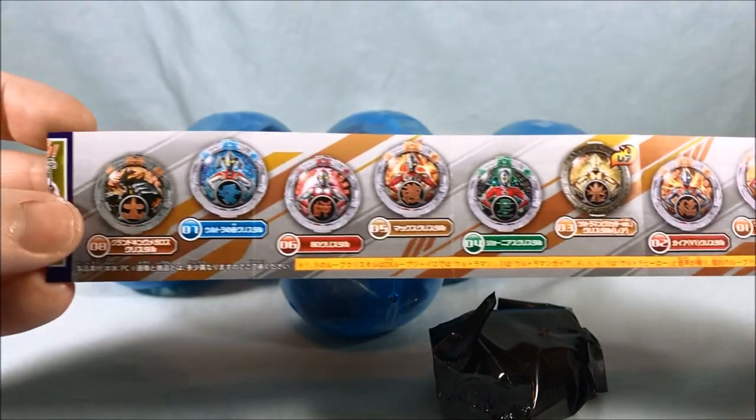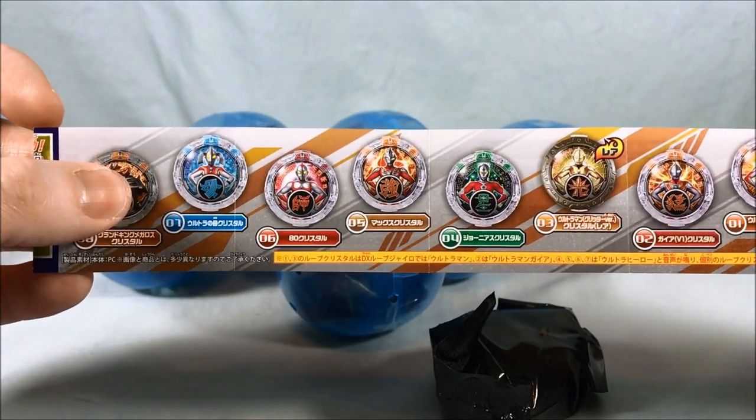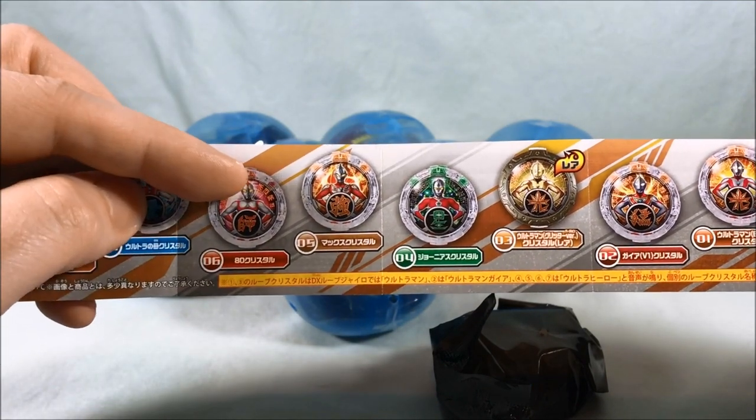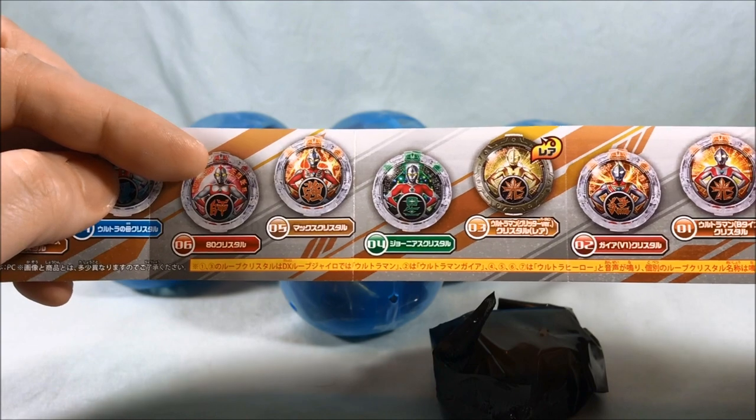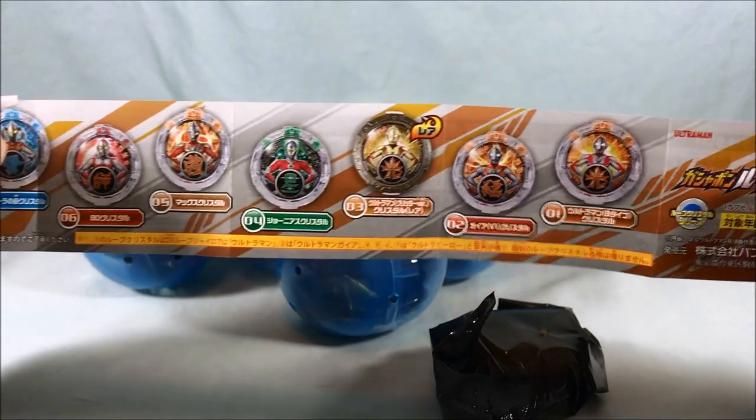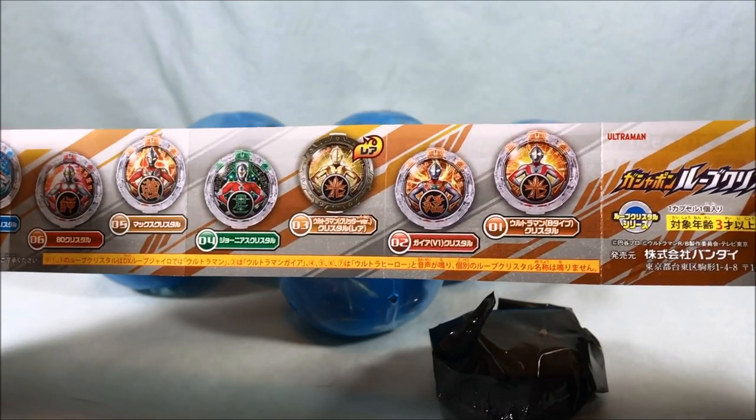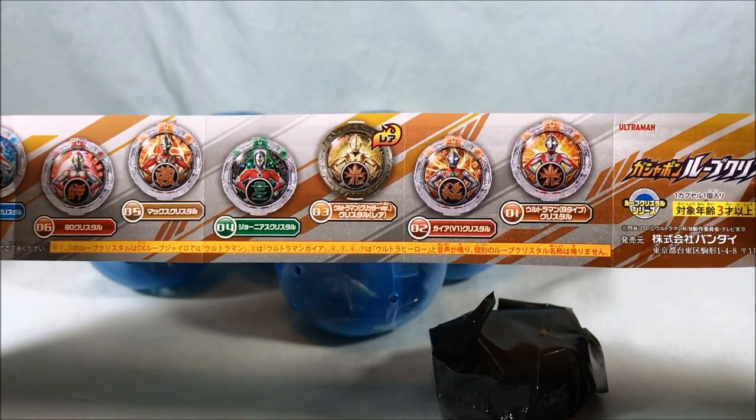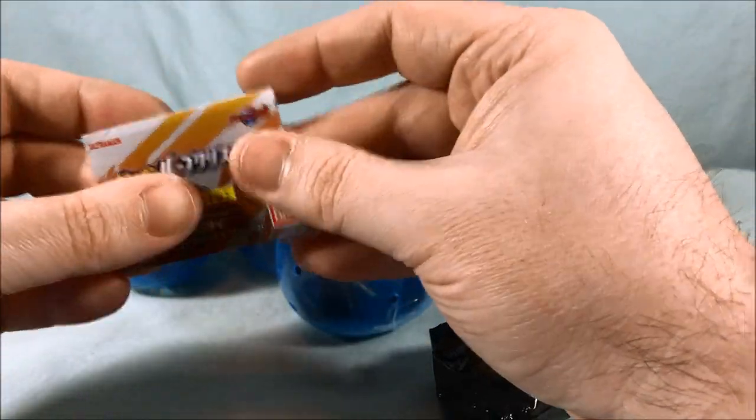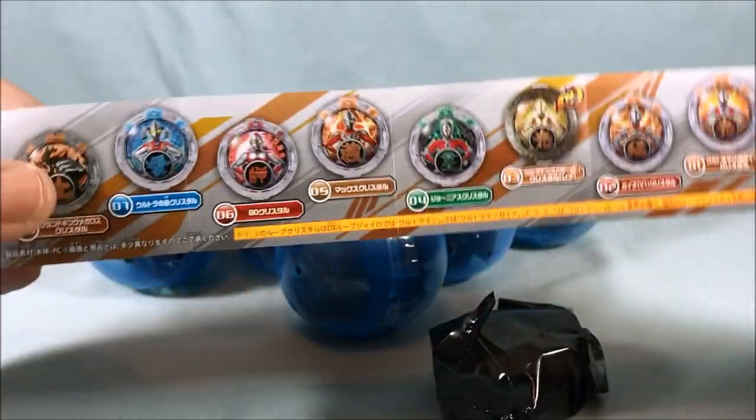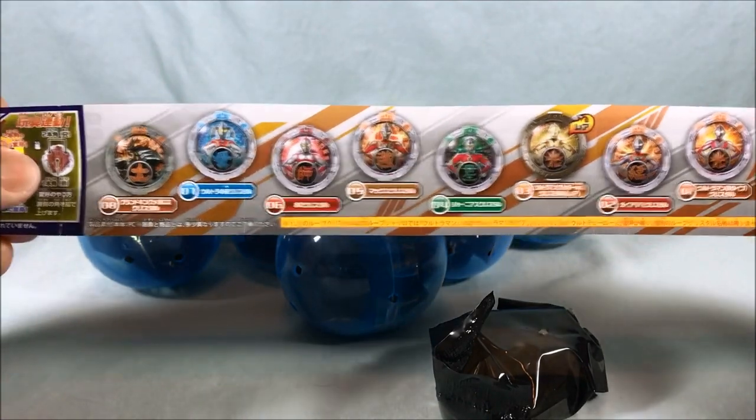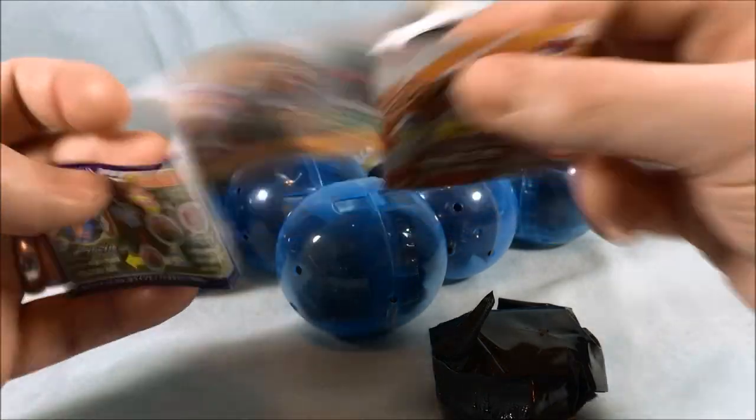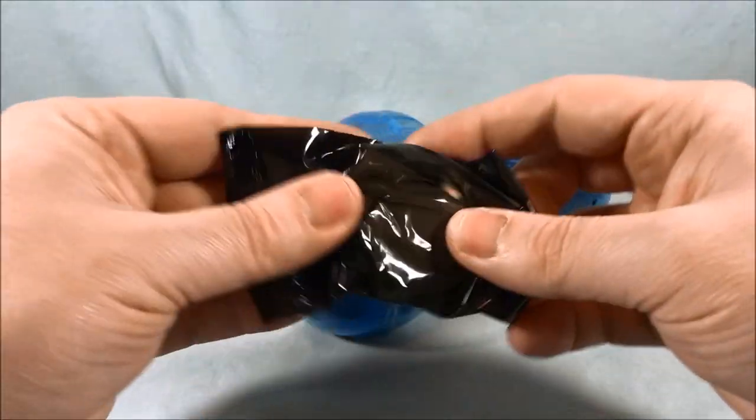So I gotta be honest, this might be the only one that I have. The Kaiju one might be the only one. Because I know I don't have Mother of Ultra, I don't have 80, I don't believe I have Max, I don't have Jonas. But that also means that we only got eight because HLJ sells them randomly in packs of eight. And I need one two three four five six. So fingers crossed. We'll see how this goes.